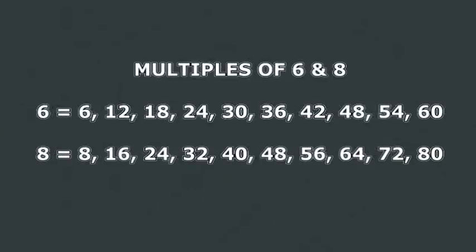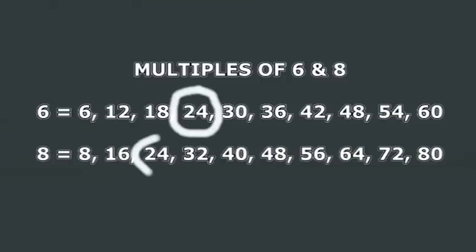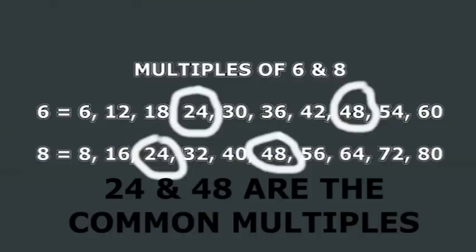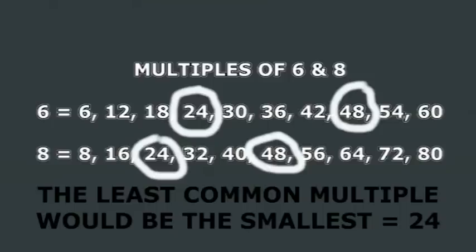Now let's write our multiples of 6 and 8 across a piece of paper. We'll circle the multiples that appear on both rows. The first multiple that appears on both lists is 24. The next common multiple would be 48. So 24 and 48 are the common multiples of 6 and 8. The least common multiple would be the smallest of these multiples, which would be 24.